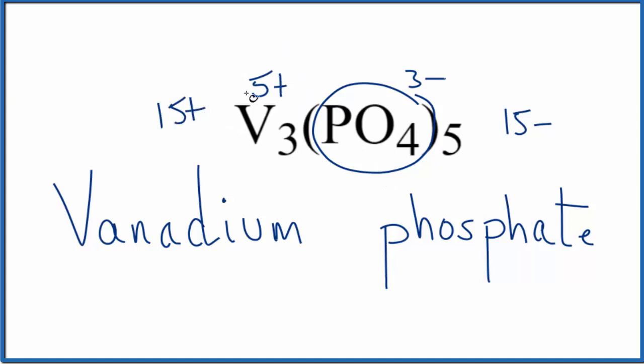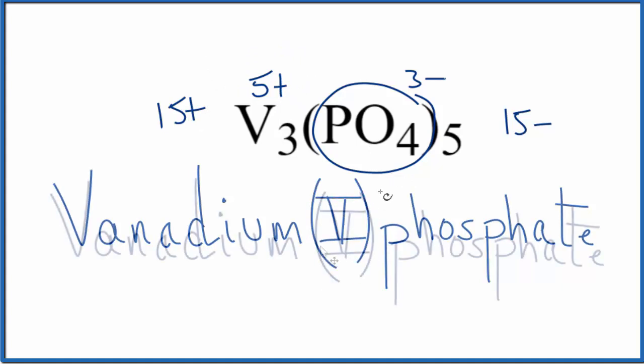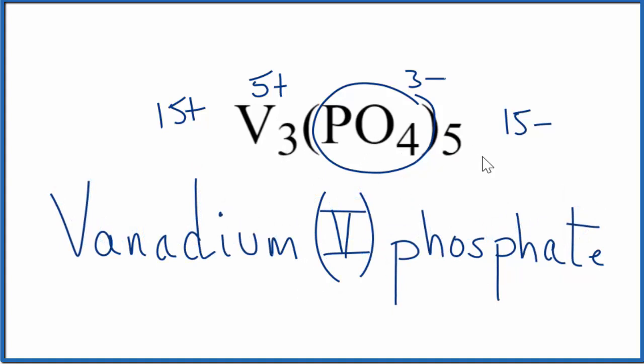So that means the oxidation number here on vanadium, that's five plus. And we write a Roman numeral five between these names here to show that. So that makes the name for V3PO45 vanadium five phosphate.